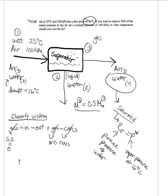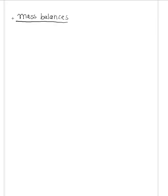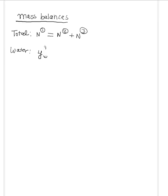Now we can begin to set up the mass balances. The general mass balance equation assumes steady state with no reactions, so the number of moles or mass coming in equals the number of moles out. We can write a total mass balance: the total moles in stream 1 equals the moles in the two streams exiting the system.